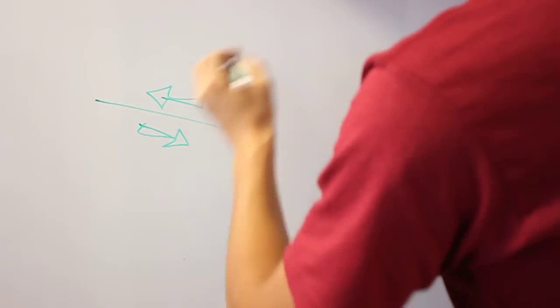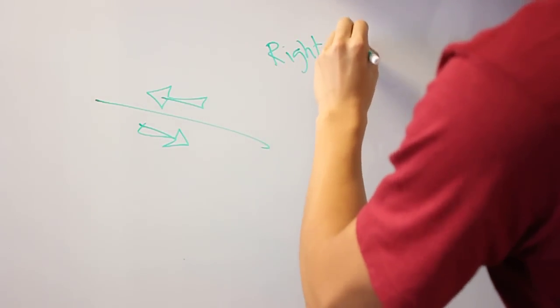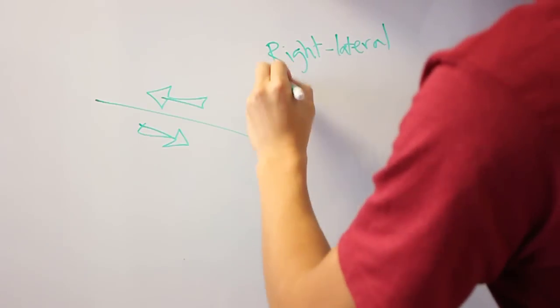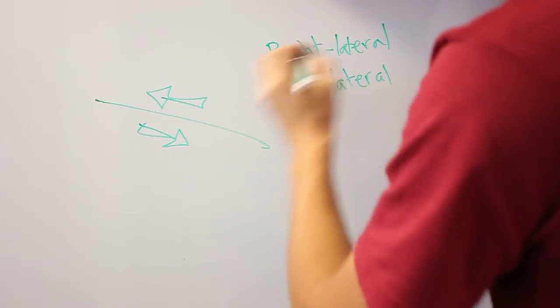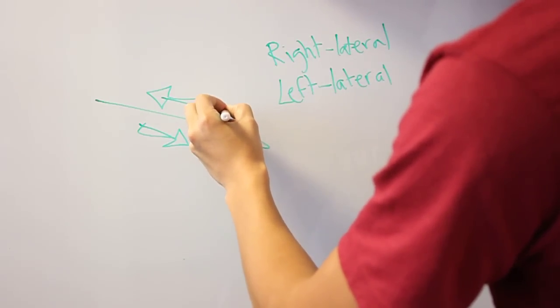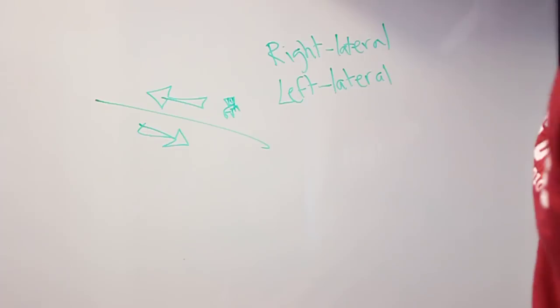And there are two types. You can either have a right lateral or a left lateral. And the way you tell is if you're standing on one side of the plate and you look to the other side, and some object like a chair moves over time, which direction does it move?